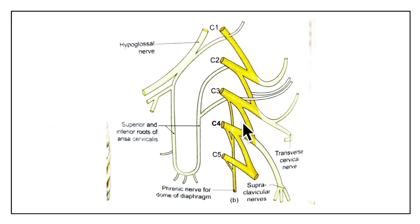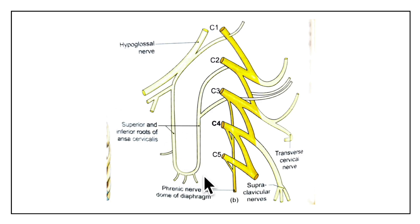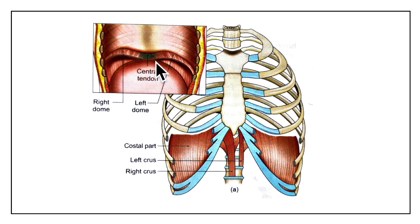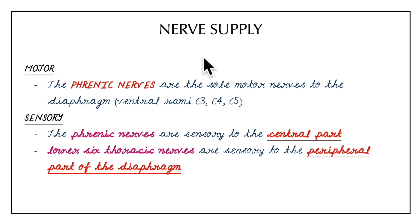Now let's learn about the nerve supply of the diaphragm. The motor supply: the phrenic nerves are the sole motor nerves to the diaphragm, arising from ventral rami of C3, C4, and C5. The sensory supply: the phrenic nerves are sensory to the central part of the diaphragm, while the lower six thoracic nerves are sensory to the peripheral part of the diaphragm.